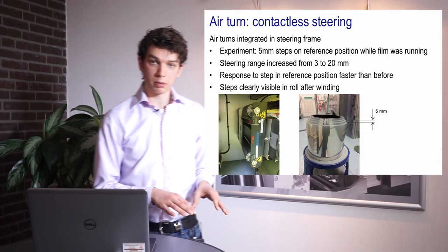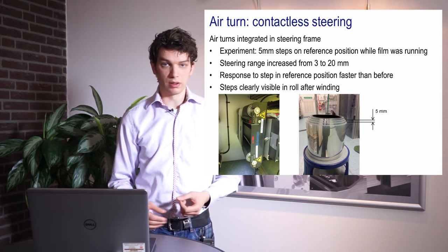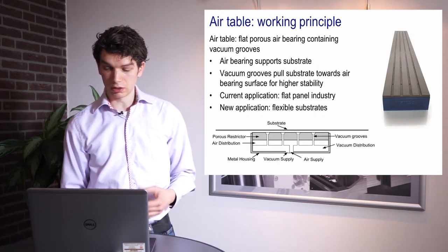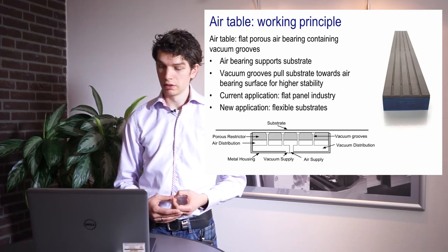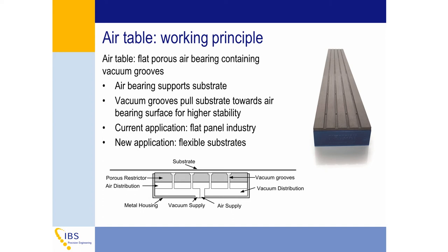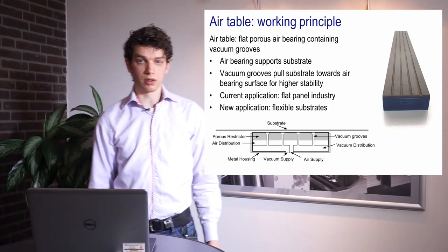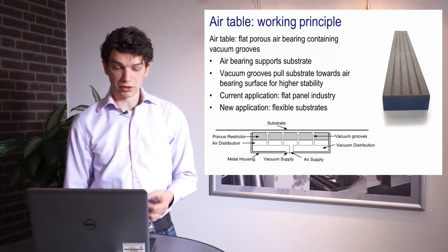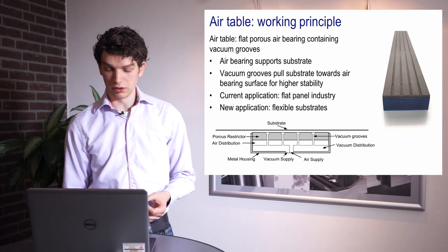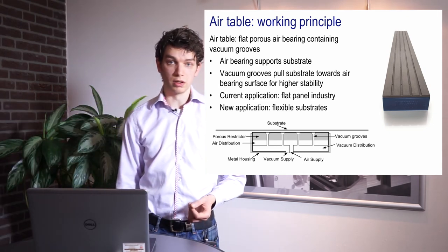The second type of air bearing is an air table, which consists of flat air bearing segments divided by grooves in which a vacuum is applied. The air bearing sections create an air cushion on which the web floats, while the vacuum grooves pull the substrate towards the surface, forming a very thin and stiff air cushion. This is currently used widely in the flat panel industry to support rigid glass plates, and is now being tried for flexible substrates — where one would expect the substrate to be pulled into the vacuum grooves.